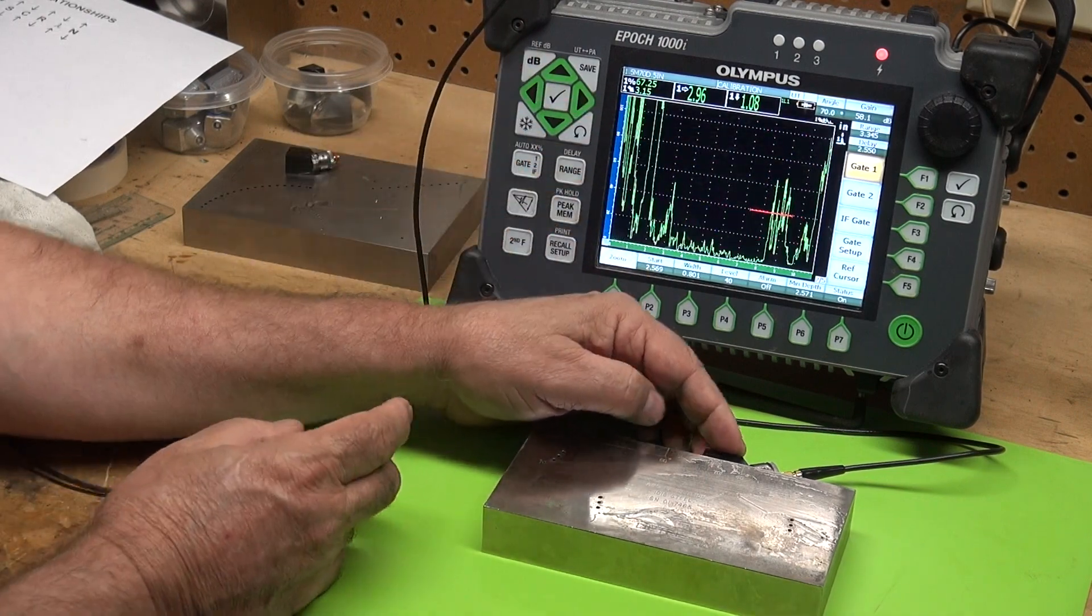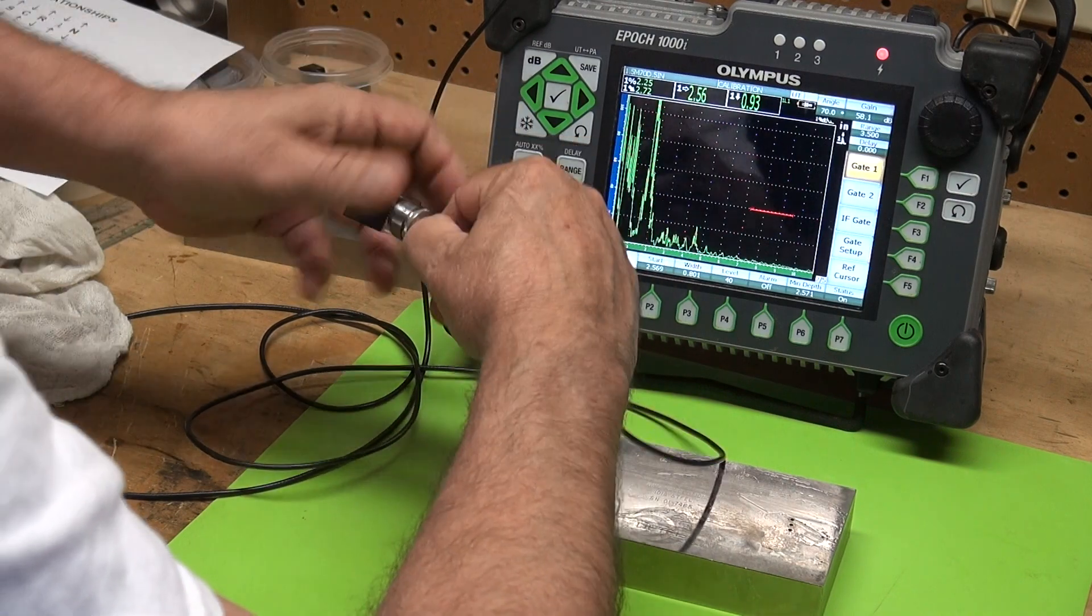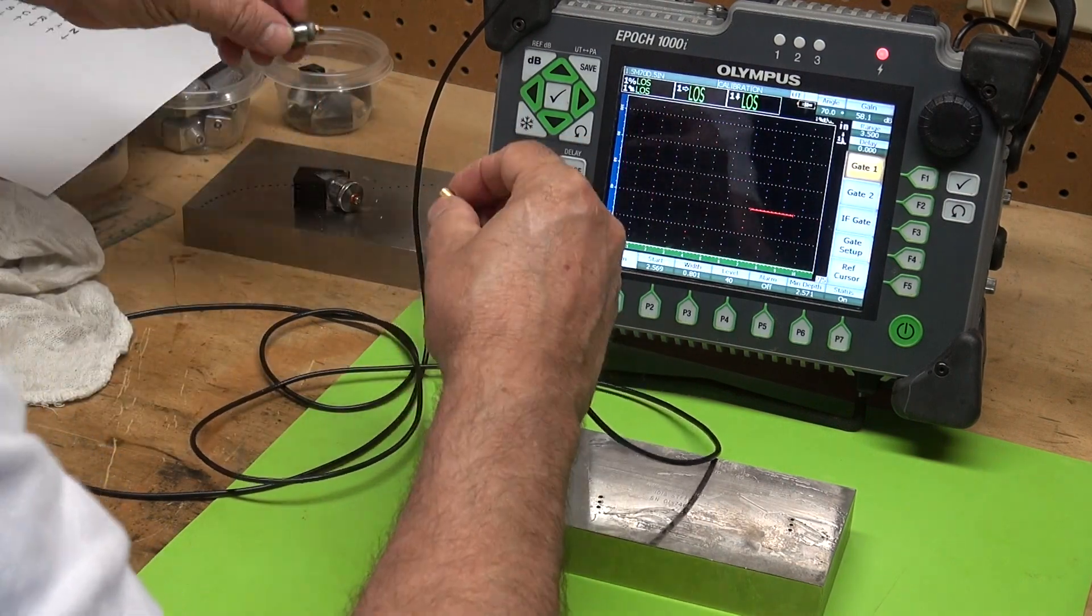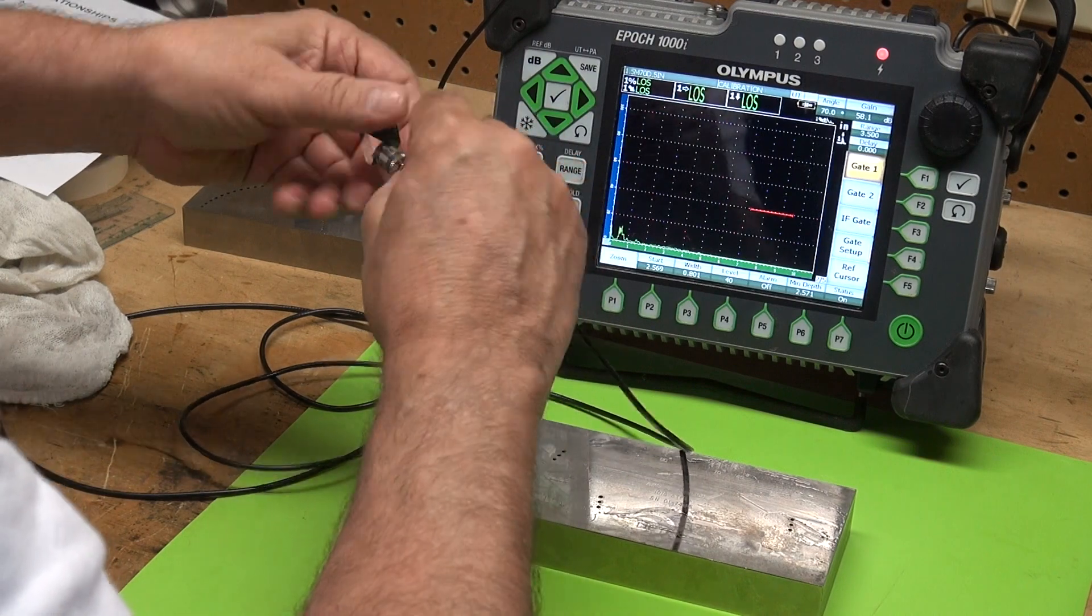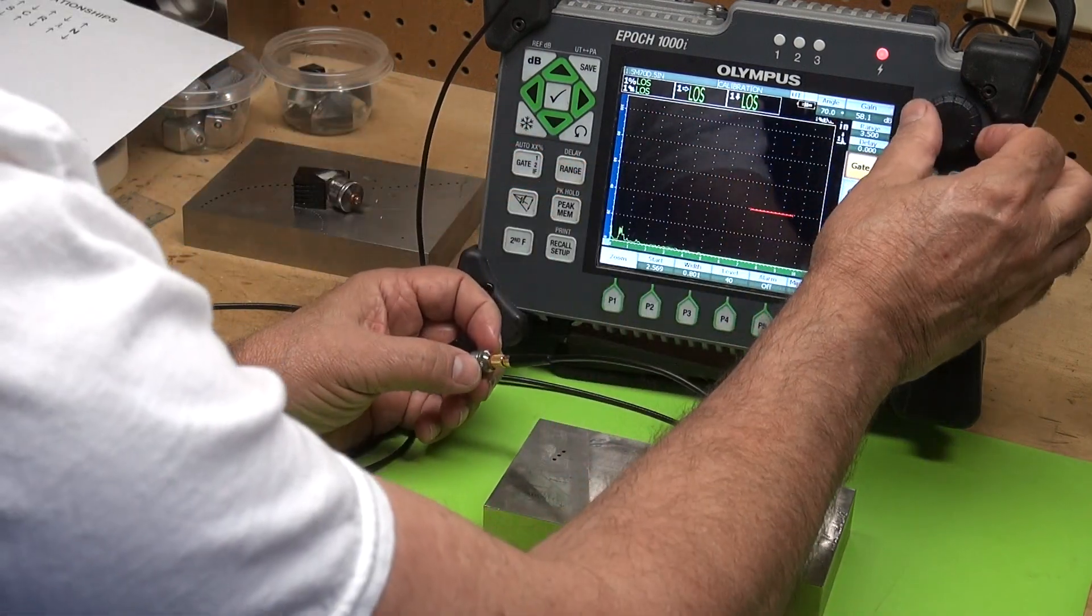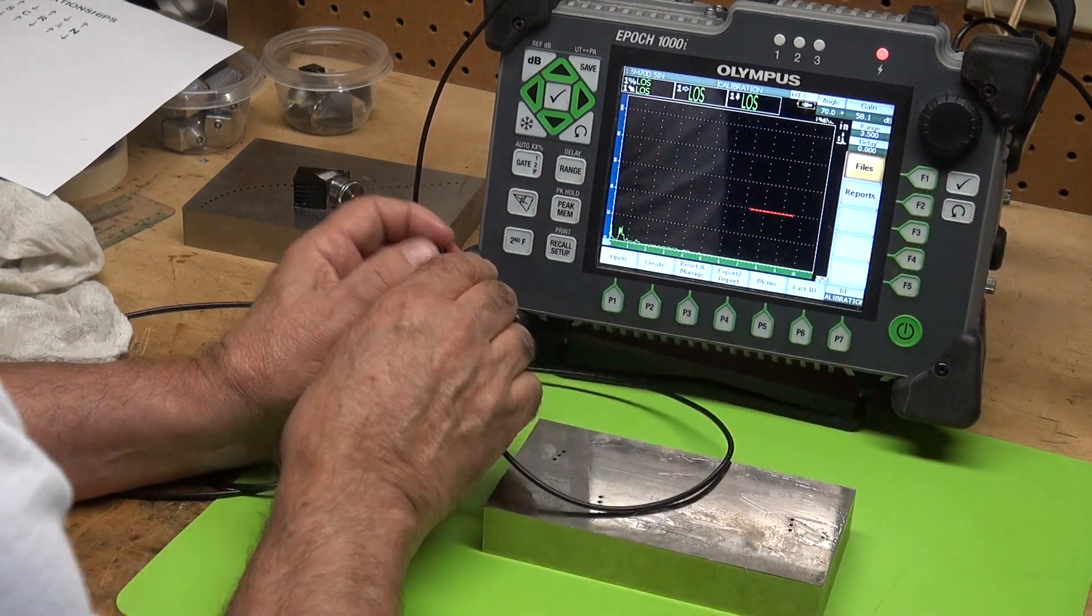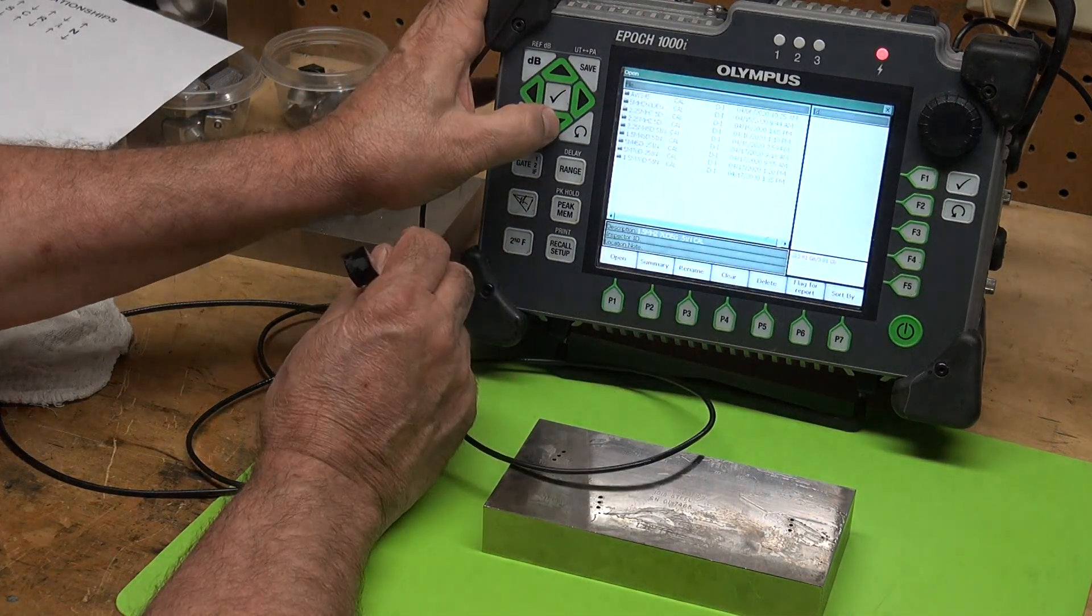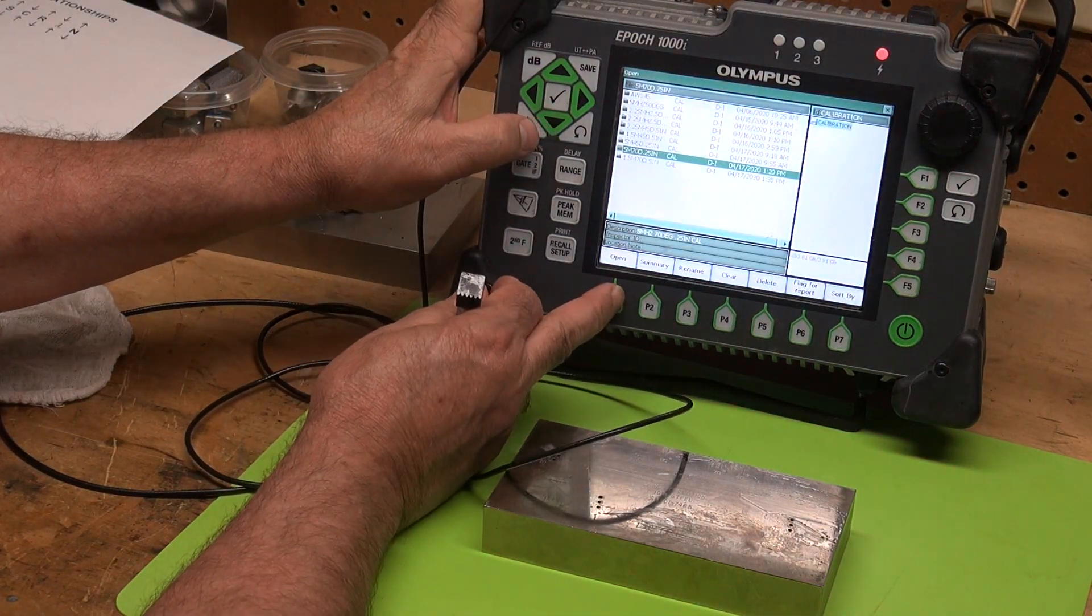Now let me pull up my setup for the five megahertz. And let me change this over real quick. Five megahertz, quarter inch. And let me pull my setup here. Let me go to my setup files open. And I have a file that is five megahertz, 70 degree, quarter inch. Let me open it.